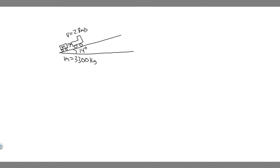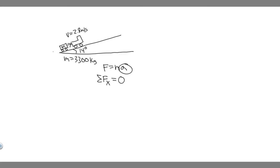We're going to solve this problem using Newton's second law — the sum of the forces equals mass times acceleration. We're going to take the sum of the forces in the x direction. When you have a problem with an incline, the x direction is along the incline, not straight across. Since this thing is moving at a constant steady speed, there's no acceleration, so the sum of the forces in the x equals zero.